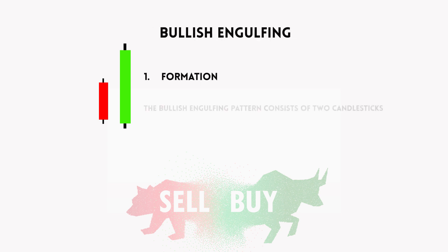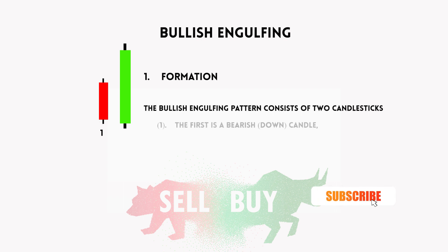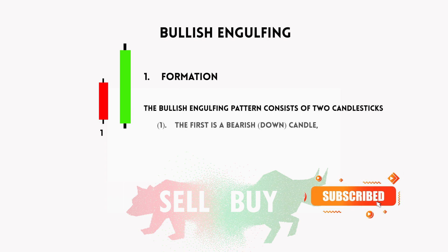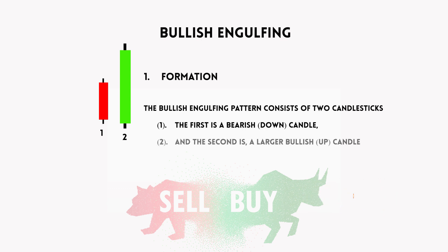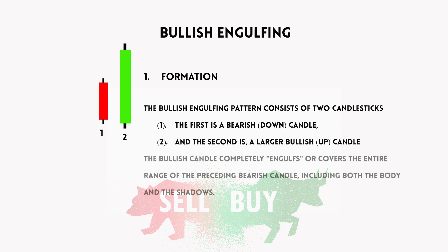The bullish engulfing pattern consists of two candlesticks. The first is a bearish down candle and the second is a larger bullish up candle. The bullish candle completely engulfs or covers the entire range of the preceding bearish candle, including both the body and the shadows.